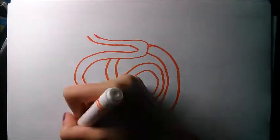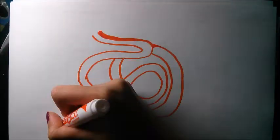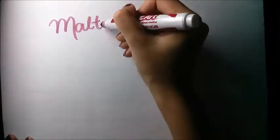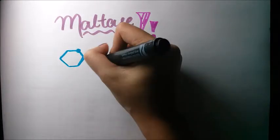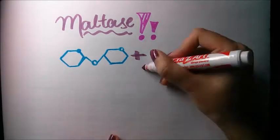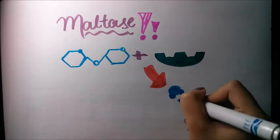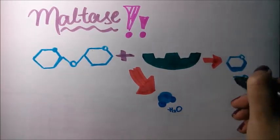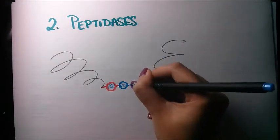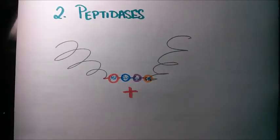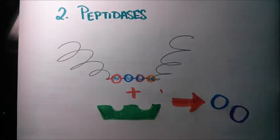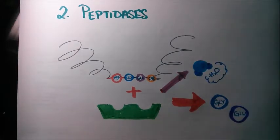The small intestine is the site of production and release of many enzymes that are essential to digestion. It produces maltase, which is an enzyme released into the small intestine responsible for catalyzing the breakdown of maltose into simple glucose — a reaction that releases water. Peptidases or proteases are also produced in the small intestine and catalyze proteins by breaking down polypeptide chains into amino acids that were linked together by peptide bonds. These enzymes carry out their function within the small intestine lumen.